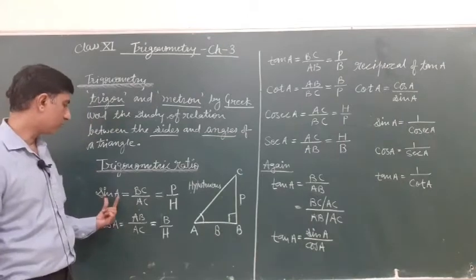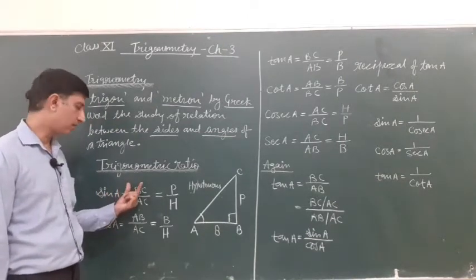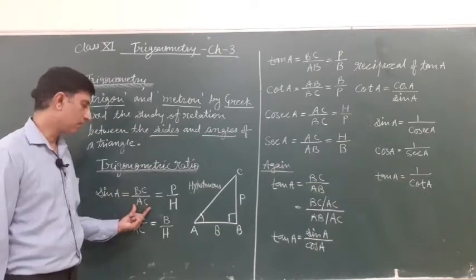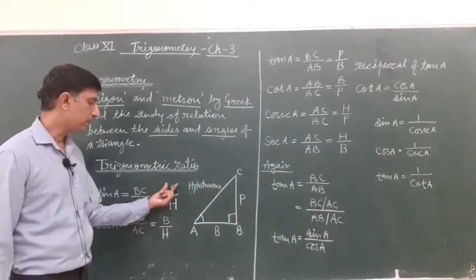So first trigonometric ratio sin A, it is represent by BC upon AC or we can write P upon H.